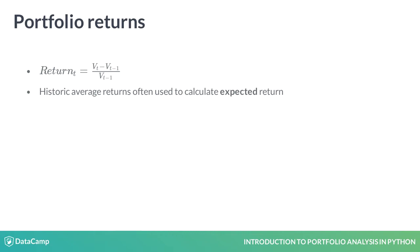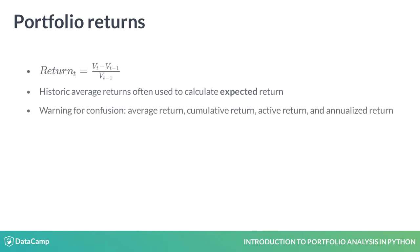There are different types of returns, which are a common cause of confusion. Most common are average returns, which are often the geometric mean of a return series over a given time span. This is not the same as cumulative return, which is the total return over a period, active return, which is the relative performance to a benchmark, or annualized returns, which are covered in the next chapter.